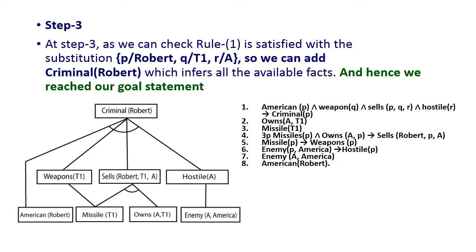In step 3, we check rule 1, which is satisfied with the substitution of Robert for P, T1 for Q, and A for R. A is a hostile nation. So we can infer criminal(Robert), which follows from the conjunction of all the available facts. Hence, we reach our goal statement: Robert is a criminal. That is all about the forward chaining algorithm.